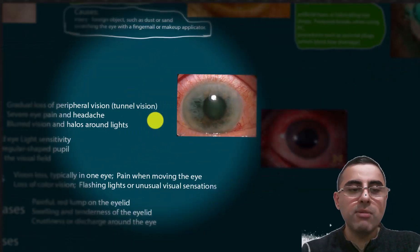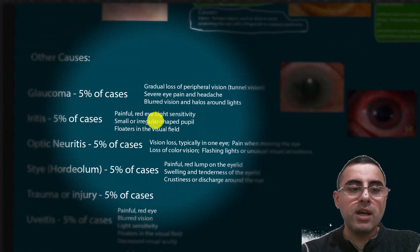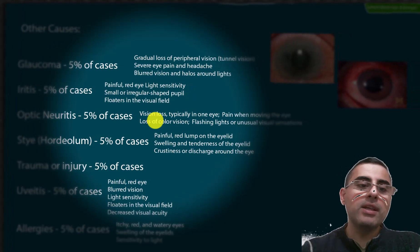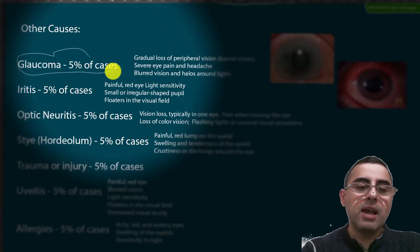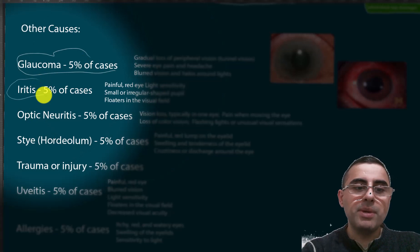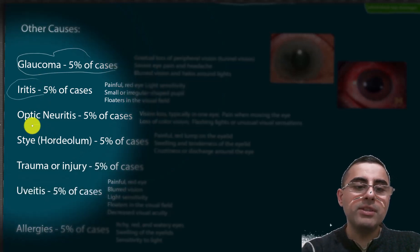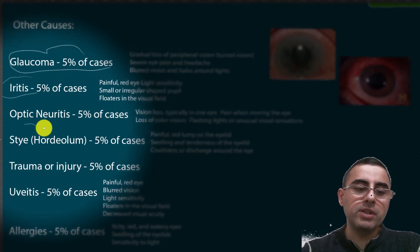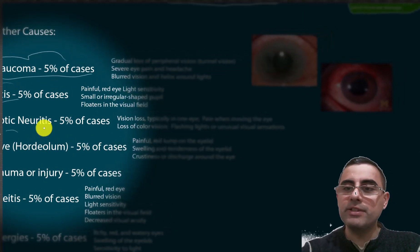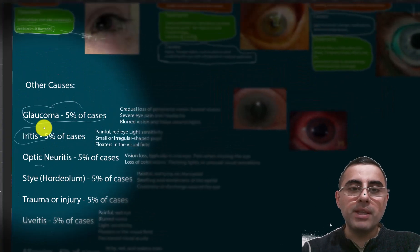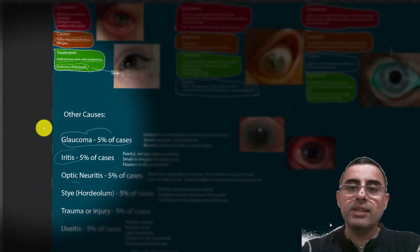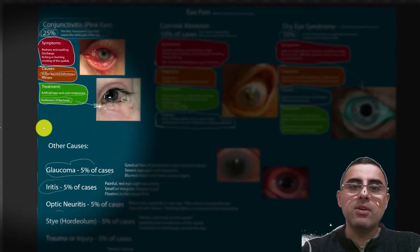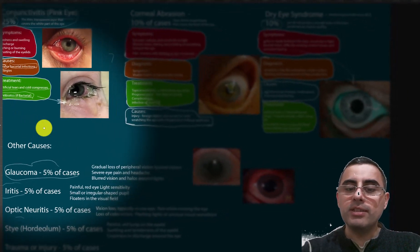Other less common causes of eye pain include glaucoma at around 5% of cases, iritis at 5%, and optic neuritis at 5%, as well as trauma, injury, allergies, and uveal conditions. These causes are much rarer. The most common causes remain conjunctivitis, corneal abrasion, and dry eye syndrome.